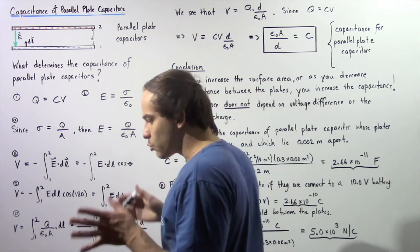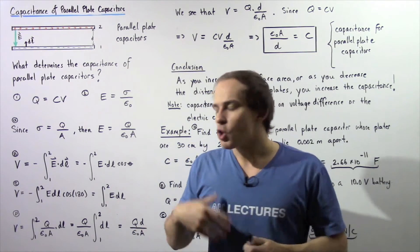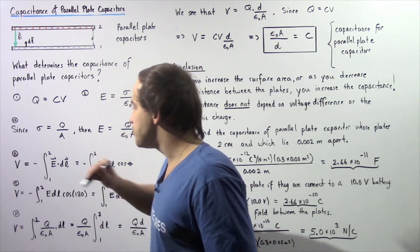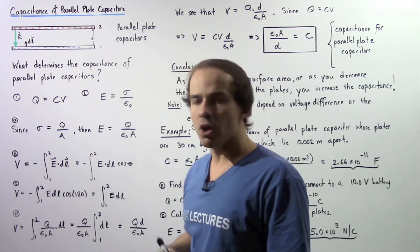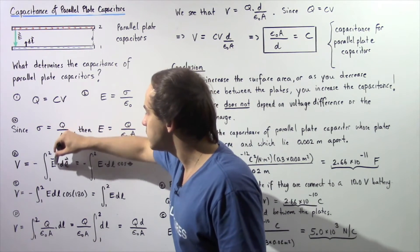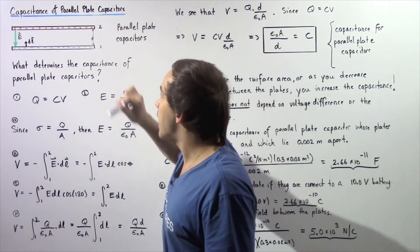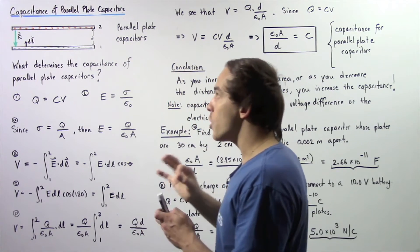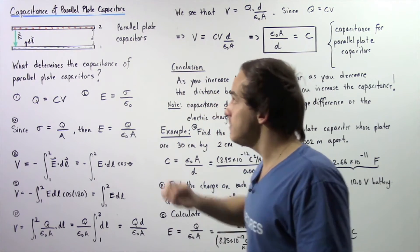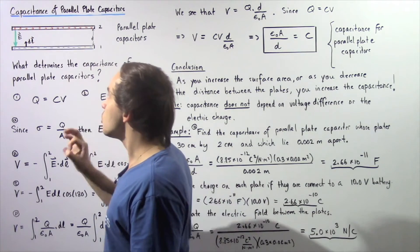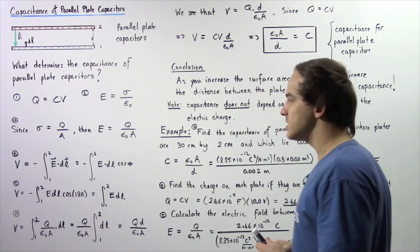Now let's recall the relationship between voltage difference and electric field. The voltage difference between plate one and plate two equals the negative of the integral of the dot product of the electric field and the infinitely small distance dl, from plate one to plate two. Notice we integrate beginning at plate one and ending at plate two, which means our dl vector points anti-parallel with respect to our electric field.